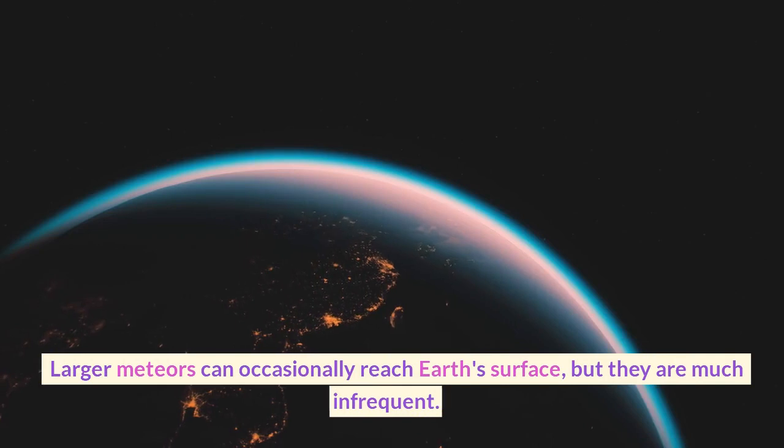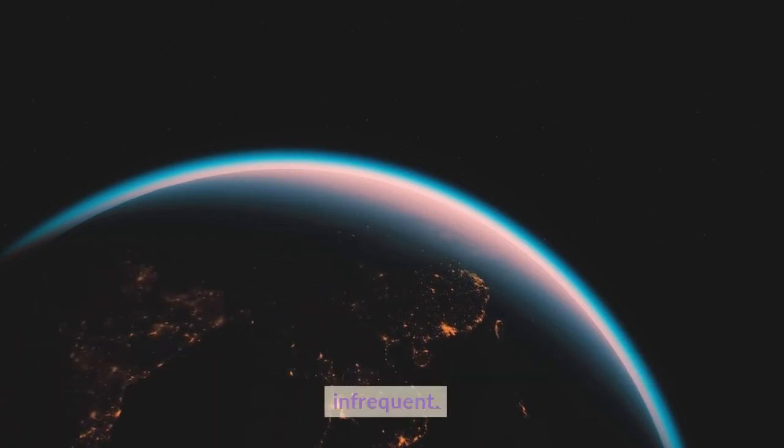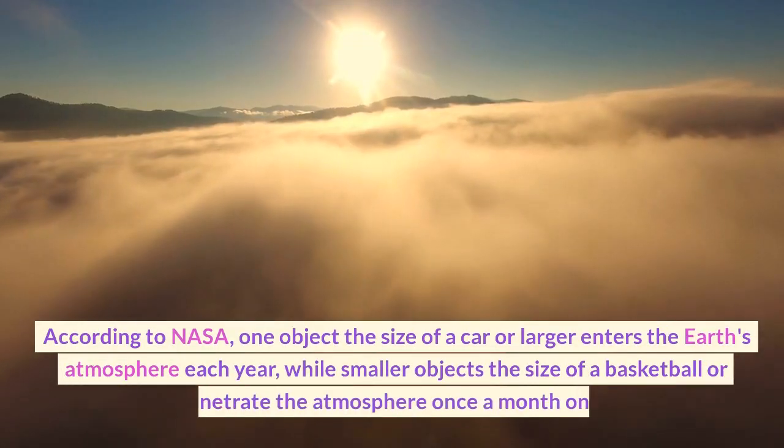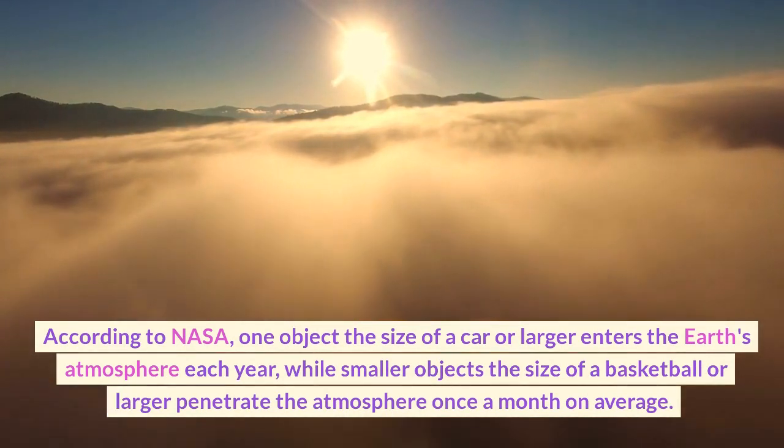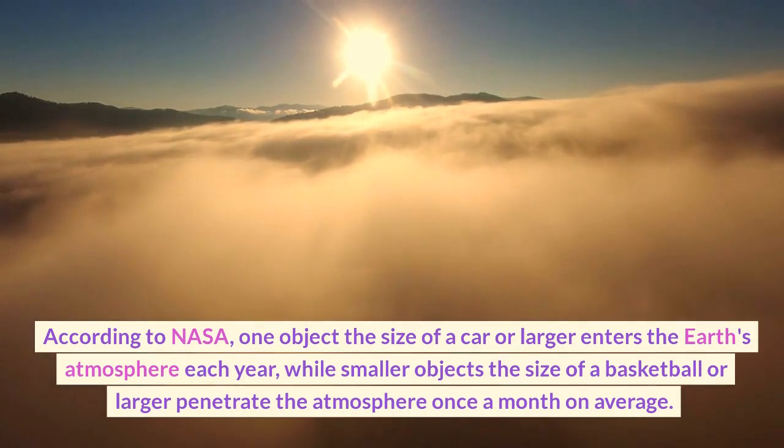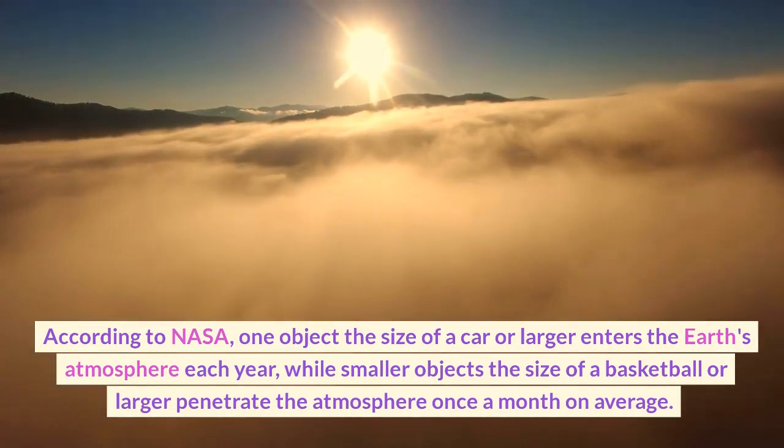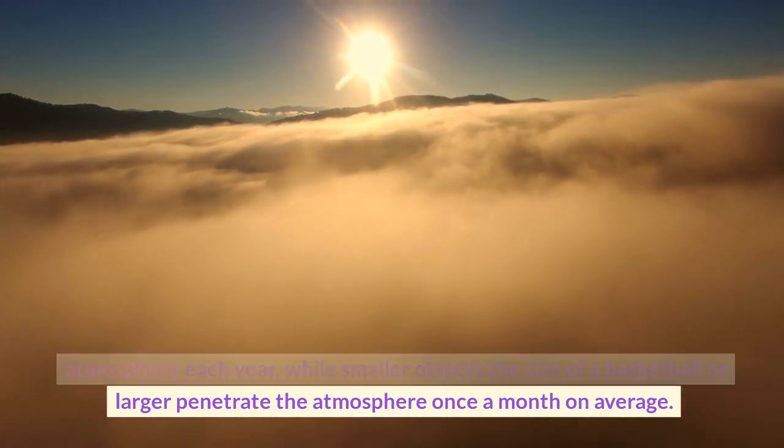Larger meteors can occasionally reach Earth's surface, but they are much less frequent. According to NASA, one object the size of a car or larger enters the Earth's atmosphere each year, while smaller objects the size of a basketball or larger penetrate the atmosphere once a month on average.